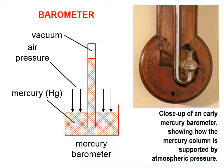And you can see here a picture of an early mercury barometer, and how the mercury column is supported by the atmospheric pressure. So the atmosphere is pressing down right there on the surface of the mercury, and you can see the mercury column going up.